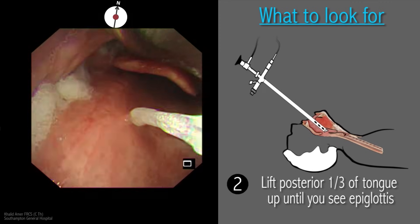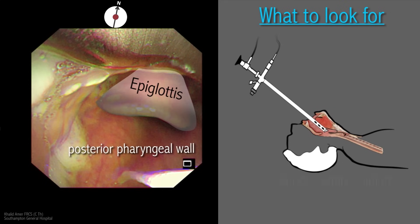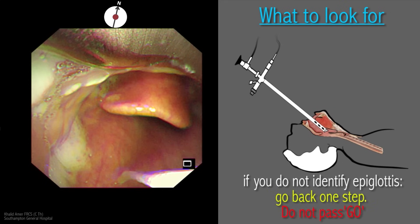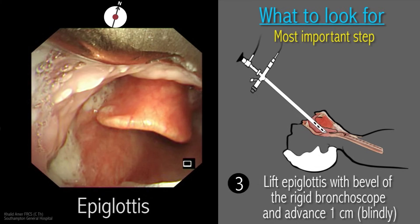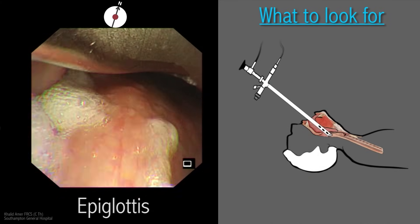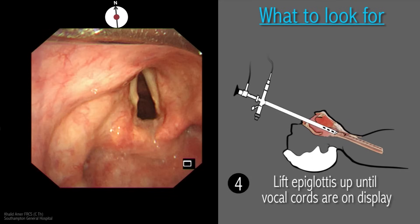The next step is crucial to entering the trachea, so pay particular attention. Lifting up the posterior third of the tongue exposes the epiglottis. The bevel of the rigid scope is then introduced for a centimeter or so under the epiglottis and the latter is lifted up while keeping the scope in the median line. Note that this is a blind move — if the epiglottis is lifted successfully, it will not be seen again. Sometimes the epiglottis is very floppy and difficult to lift. However, this is a crucial step, and if the epiglottis isn't identified or not lifted up successfully, you should not proceed. Go back one step and try again.